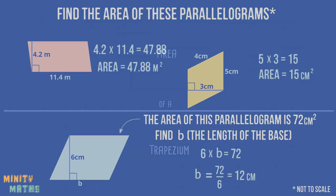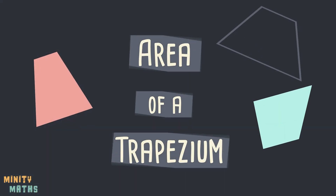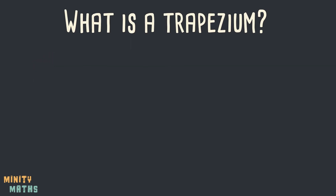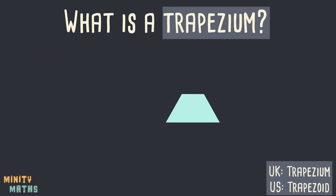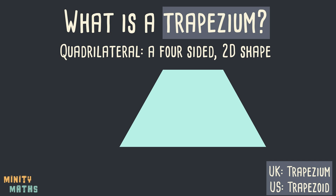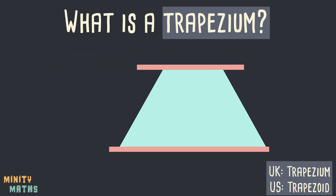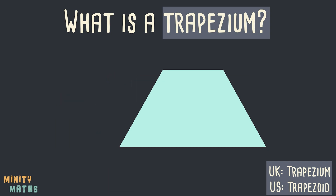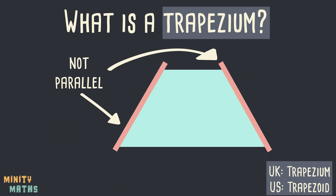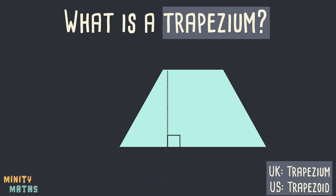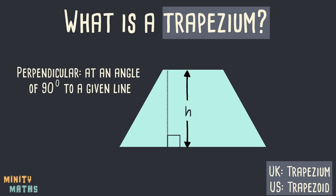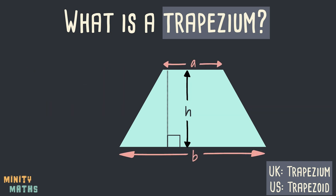Next, we are going to cover how to find the area of a trapezium. So, what is a trapezium? A trapezium is a quadrilateral — a four-sided shape — with a pair of sides that are parallel. In the UK it is called a trapezium, and in the US it is known as a trapezoid. So, how can we find the area of a shape like this? Well, we are usually given the perpendicular height of the trapezium, along with the lengths of the parallel sides, which are normally labeled A and B. With this information we can find the area.